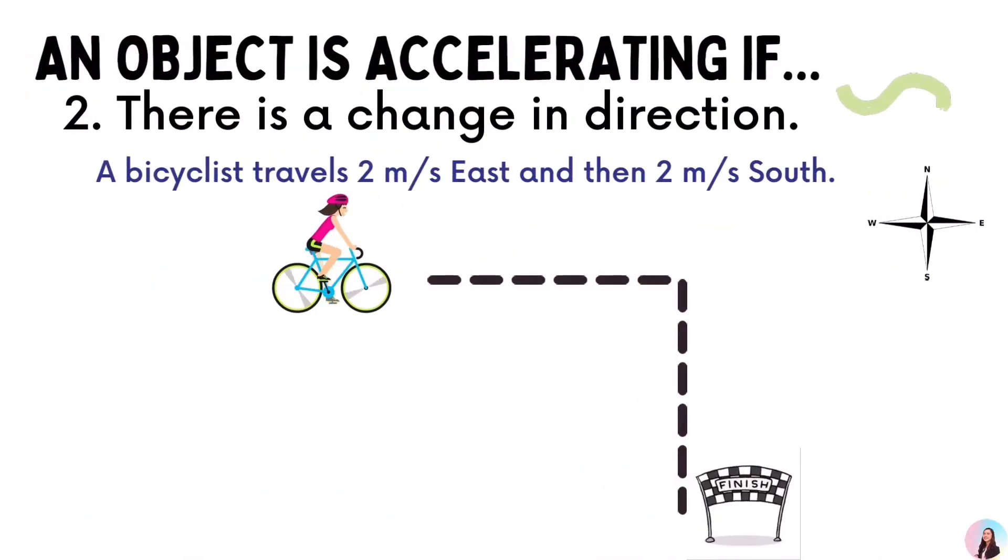Number 2, there is a change in direction. For example, a bicyclist travels 2 meters per second east and then 2 meters per second south.